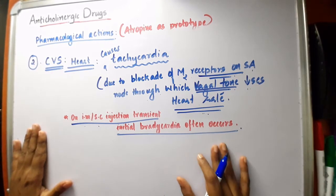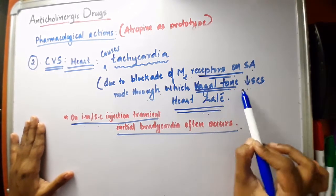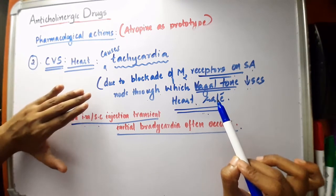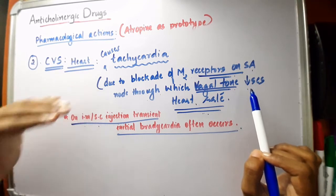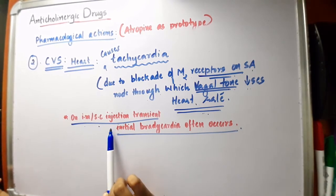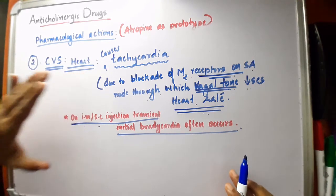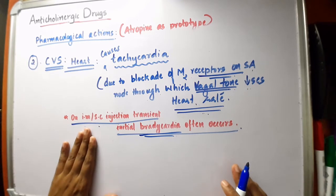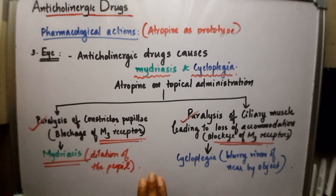The action of anticholinergic drugs on the cardiovascular system — the prominent action is tachycardia, which is a fast heart rate. Through M2 receptors on the SA node, vagal tone decreases the heart rate; anticholinergic drugs counteract this by blockade of M2 receptors, causing tachycardia. Note that on intramuscular or subcutaneous injection, a transient initial bradycardia often occurs for a short period of time.